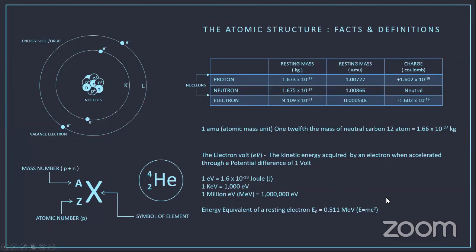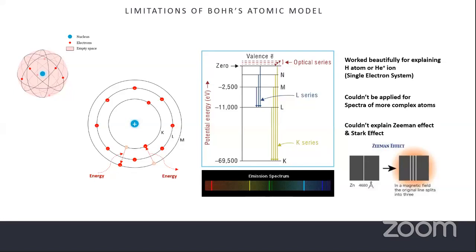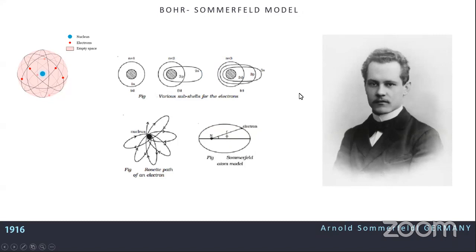According to Einstein's formula E = mc², the rest energy of an electron equals 0.511 MeV. The Bohr model worked well for hydrogen atoms or helium ions with one electron, but could not explain complex multi-electron spectra or effects like the Zeeman effect and Stark effect, which showed spectral lines split into fine lines when exposed to magnetic or electric fields.